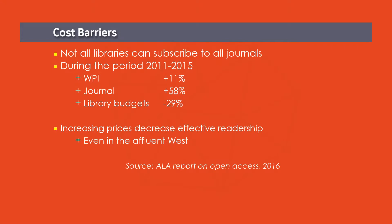Any services created by libraries will not be hindered by the exorbitant price rise of journals. Looking at the last five years of data — 2011 to 2015 — the wholesale price index increased by just plus 11 percent, but journal prices increased by plus 58 percent, and library budgets all over the world were reduced by minus 29 percent. Under such circumstances, the question is: how can libraries serve their users without making exorbitant payments to journal publishers?